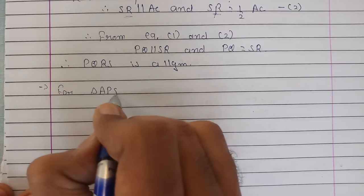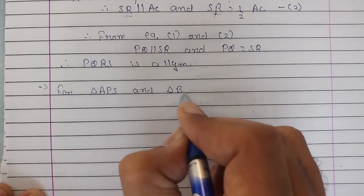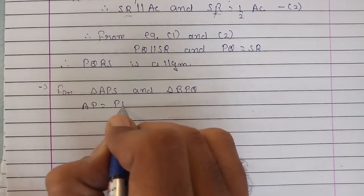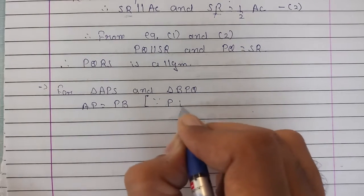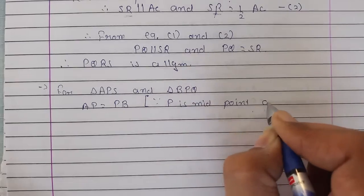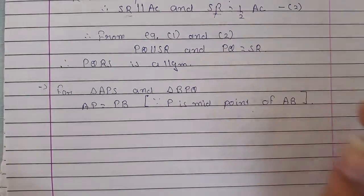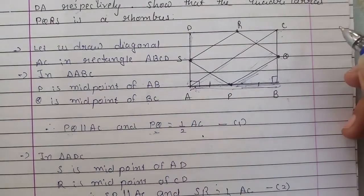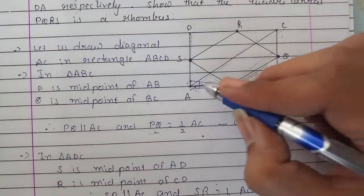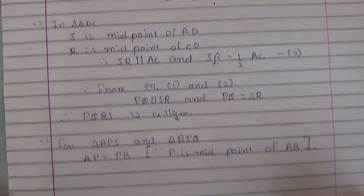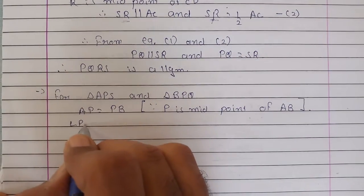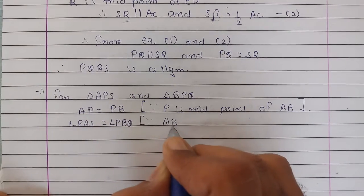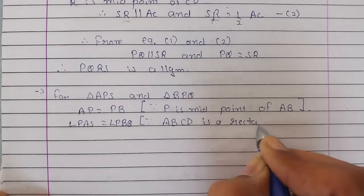For triangle APS and triangle BPQ, what do we have is AP is equal to PB. The reason is P is a midpoint of AB. Then, this angle A and this angle B will be the same because ABCD is a rectangle. So the angle is already 90 degrees.